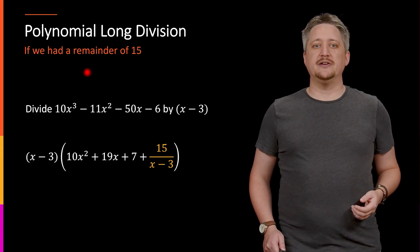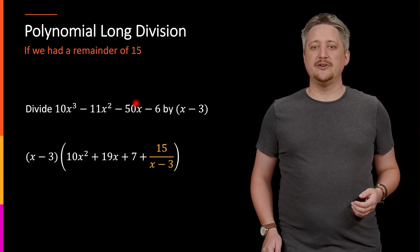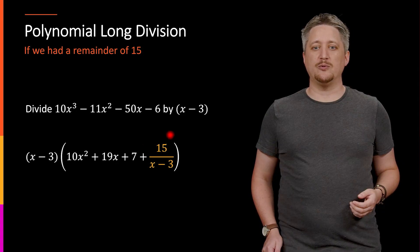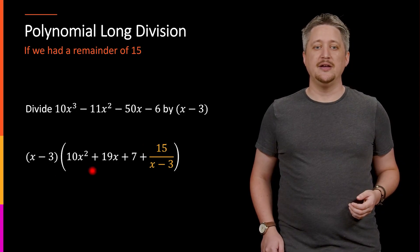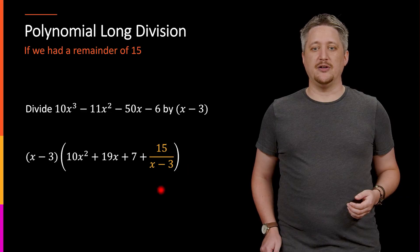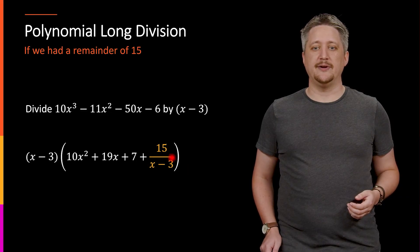As it turns out, having a remainder means it didn't factor cleanly because it didn't end up being a polynomial inside because I have this over x - 3 bit in the fraction form here. So this is no longer a polynomial.